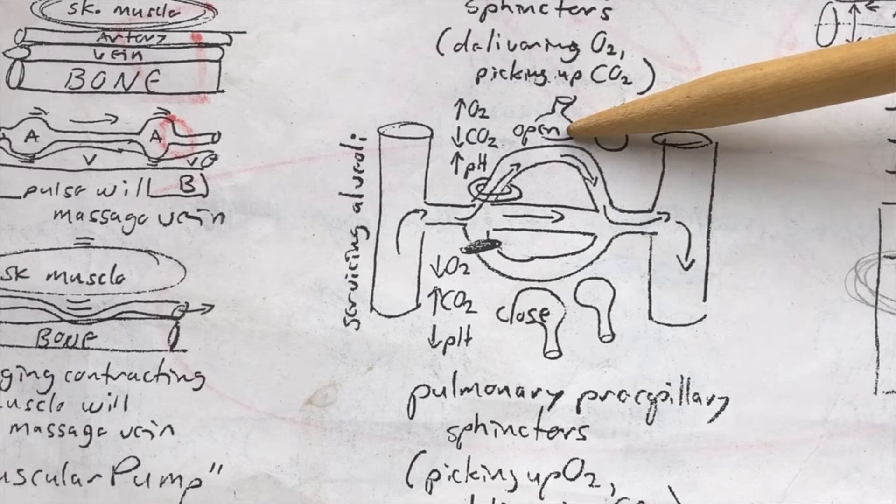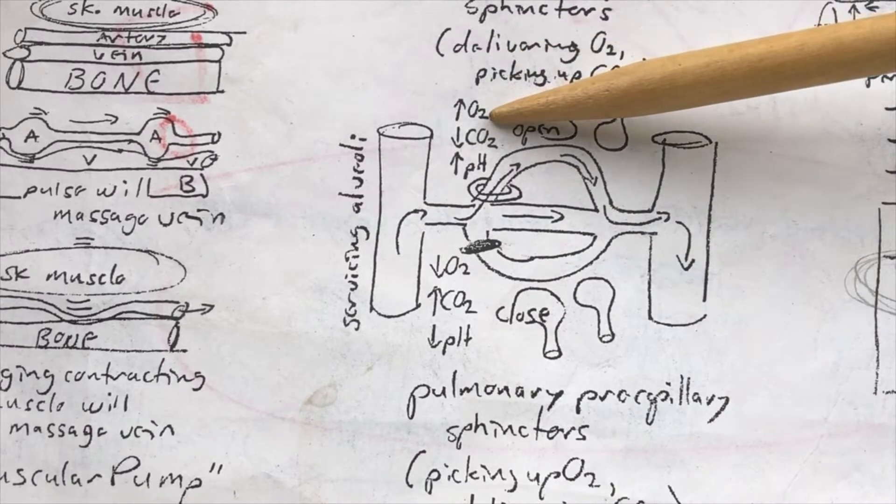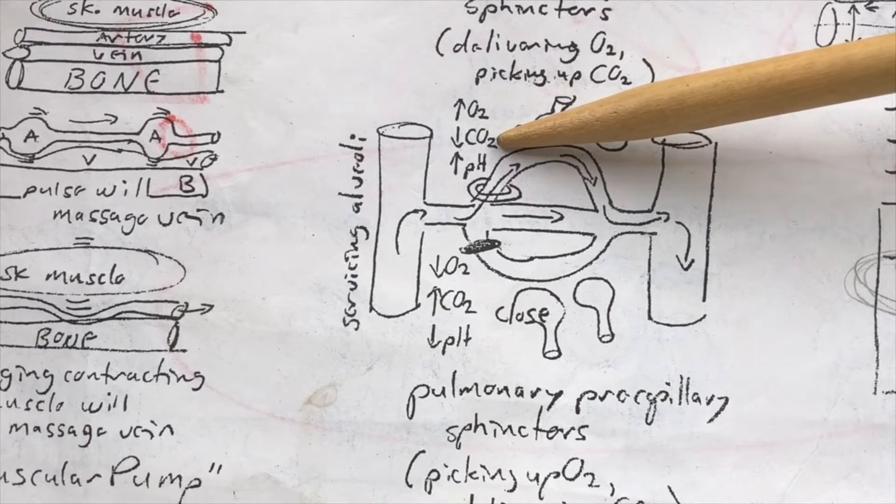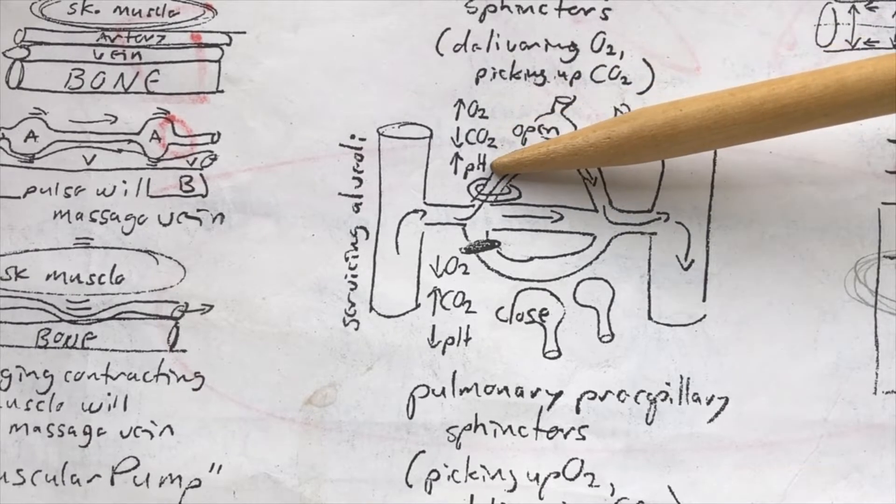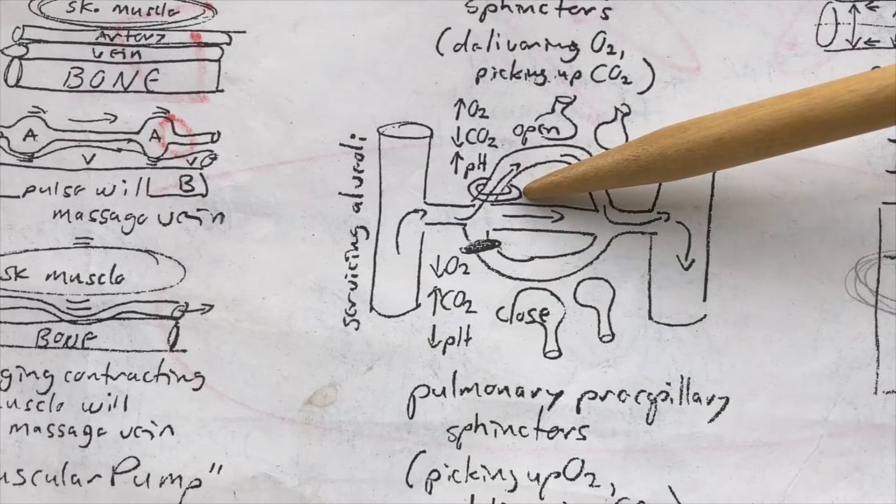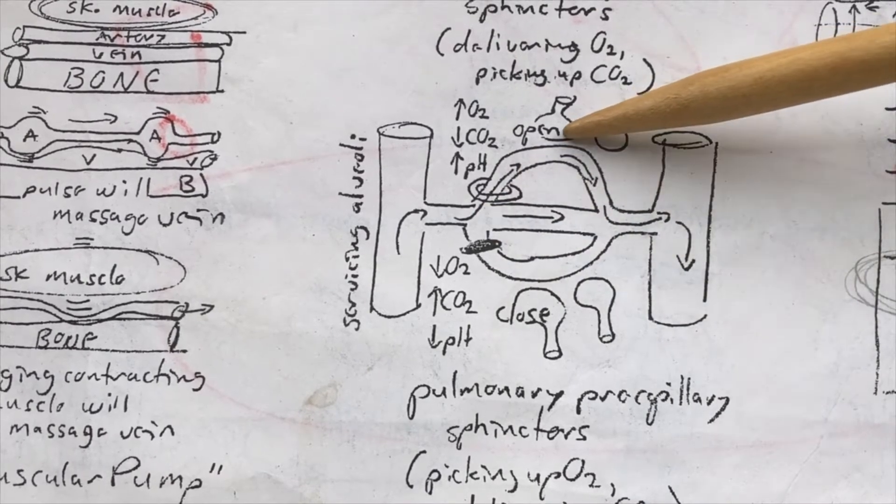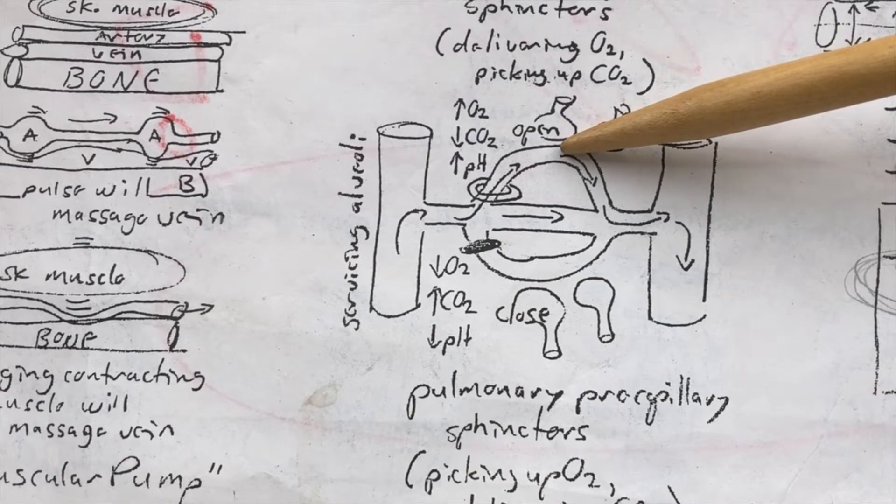So, in those areas of the lungs where there's fresh air inside the alveoli, the oxygen content will be high, the carbon dioxide content will be low, and the pH will be high, because there isn't a lot of acid. Because of that, this is good shopping, and that will cause the pulmonary pre-capillary sphincters to open, to allow the blood to go through here, to pick up the oxygen, and drop off the carbon dioxide.